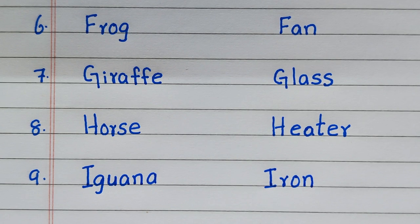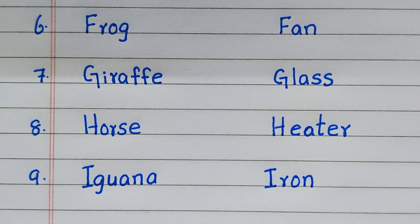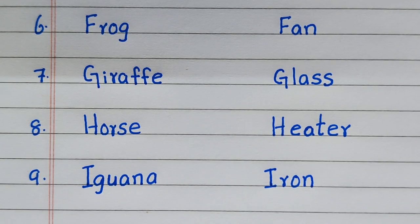With the alphabet F, living thing is frog, non-living thing is fan. G: giraffe, glass. H: horse, heater. I: iguana, iron.